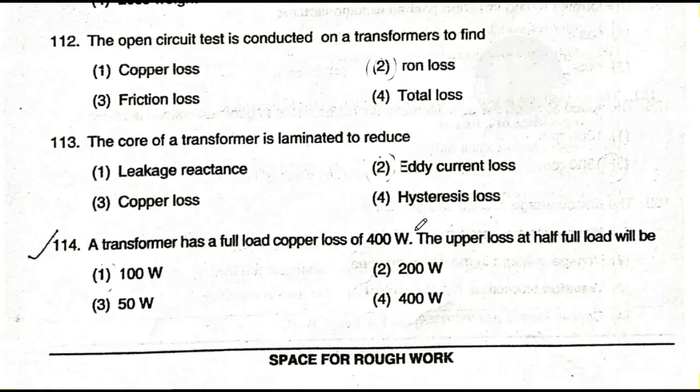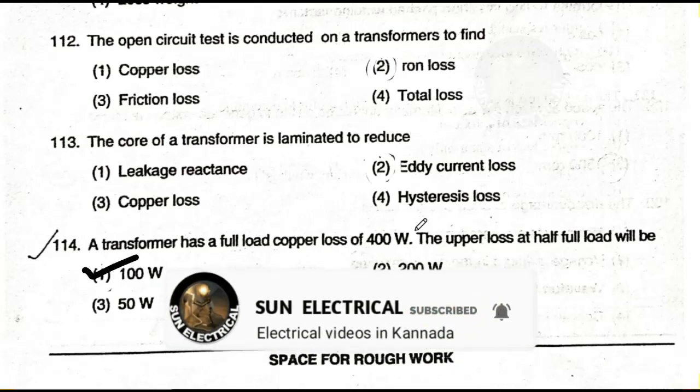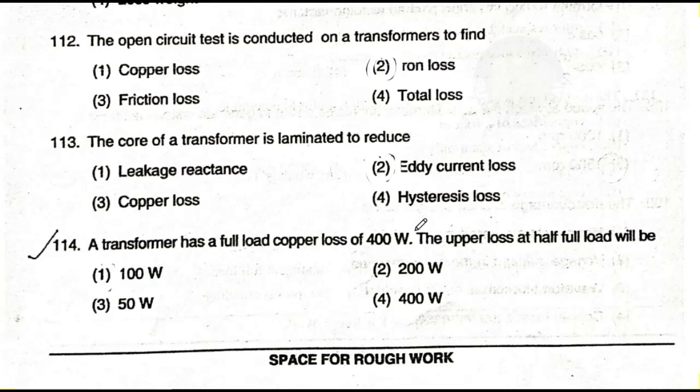Question number 114: A transformer at full load has copper losses of 400 watts. The copper losses at half load will be — option one: 100 watts; option two: 200 watts; option three: 50 watts; option four: 400 watts. The answer is option one — 100 watts.